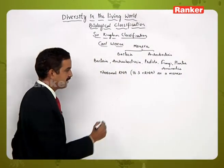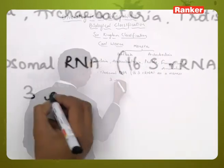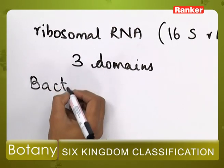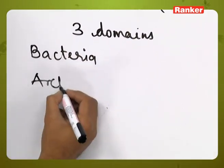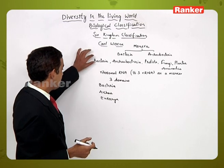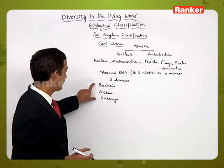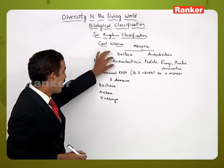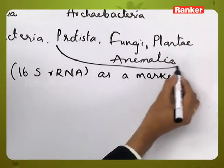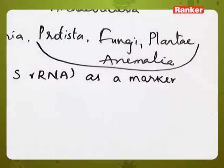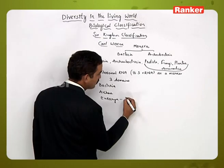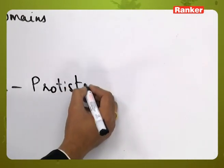All six kingdoms have been kept under or divided into three domains. Those three domains are Bacteria, Archaea, and Eukarya. The kingdom Bacteria is kept under domain Bacteria, Archaebacteria is kept under domain Archaea, whereas the remaining four groups — Protista, Fungi, Plantae, and Animalia — all include eukaryotic organisms, so they have been kept under Eukarya.